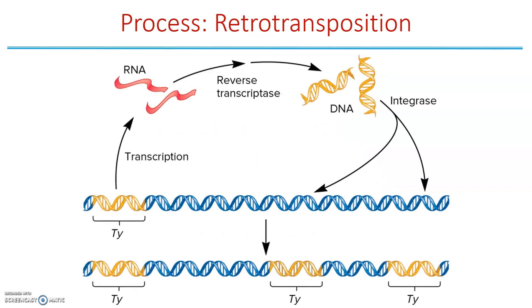In retrotransposition, the DNA sequence is transcribed into RNA. That RNA is reverse transcribed back to DNA by reverse transcriptase, then integrase makes staggered cuts and inserts that DNA elsewhere in a chromosome. Because it goes through transcription, we can make many copies — four, five, or six mRNAs — and keep integrating them in. This makes it easy to see how retrotransposons can generate so many copies.